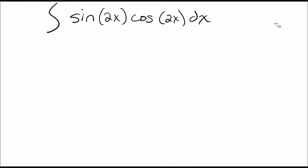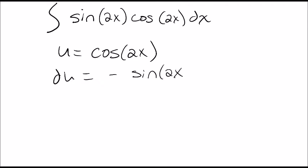There's also a second way to do this problem - the reverse way. You could let u be cosine of 2x instead, and then du would equal negative sine 2x times the derivative of 2x, which is 2.